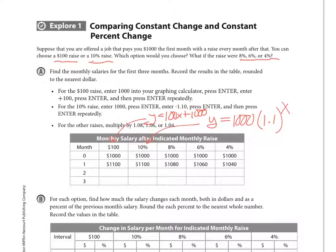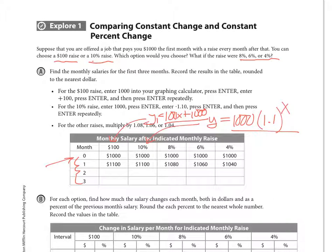On your calculator, for Y1 type in the hundred-dollar-per-month equation: 100x + 1000. For Y2 type in the exponential function: 1000 × 1.1^x. Then go to Second > Window for table set. Start at zero, delta table going up by ones, both on auto. Then press Second > Graph to go to your table.